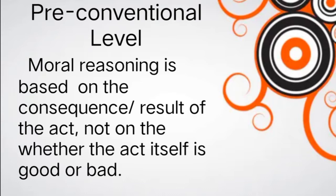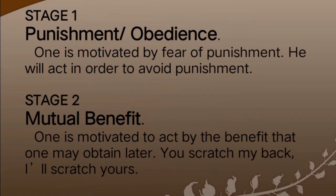At the pre-conventional level, moral reasoning is based on the consequence or result of the act itself — whether it is good or bad. This level focuses on what will be the result of the action we will be doing. It has two stages: number one is punishment or obedience, and number two is mutual benefit.